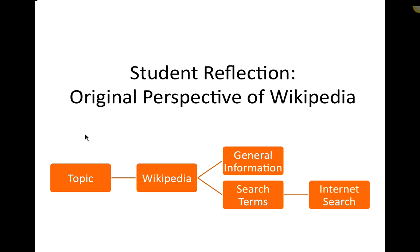I'm going to tell you a little bit about how it went — starting with some anecdotes, then I'll share my assessment data. One assignment in spring 2012 was having students do what I call the reflective PowerPoint — a graphical discussion of what their process was like as editors on Wikipedia, and how their perspective of Wikipedia changed. One student's original perspective was: start with a topic, check Wikipedia for general information and search terms, then do a Google search. That was his original research flowchart.